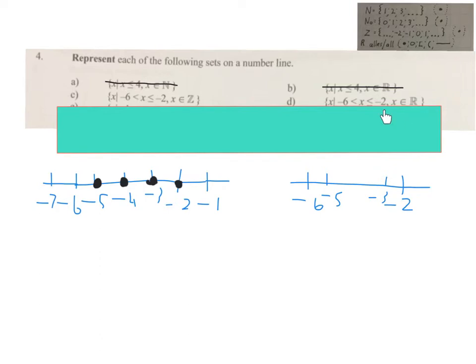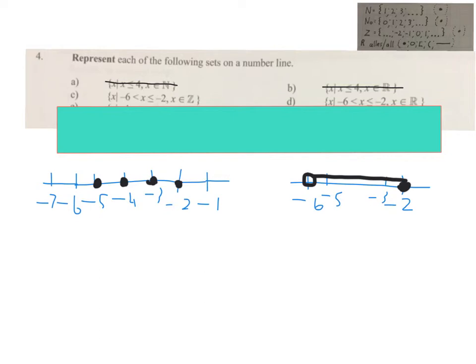For real numbers the answer is easier — you always use both endpoints: minus 2 and minus 6. The equal sign gives a black dot at minus 2, and no equal gives a circle at minus 6. Then because it's real numbers, I draw a line connecting them with millions of dots in between. We want all the numbers between minus 6 and minus 2, excluding minus 6 and including minus 2.